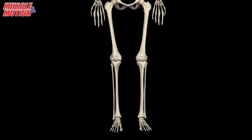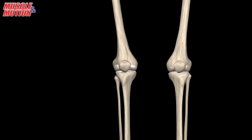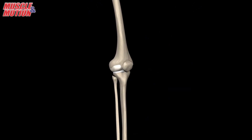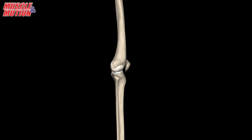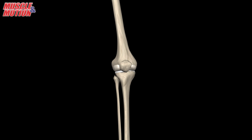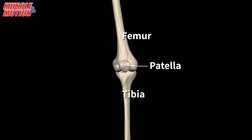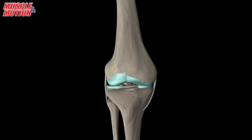Let's start with the bones. The knee joint is one of the largest and most complex joints in the body. It consists of four bones and an extensive network of ligaments and muscles. The four bones that form the knee joint are: the thigh bone, the femur; the shin bone, the tibia; the kneecap, the patella; and the fibula.